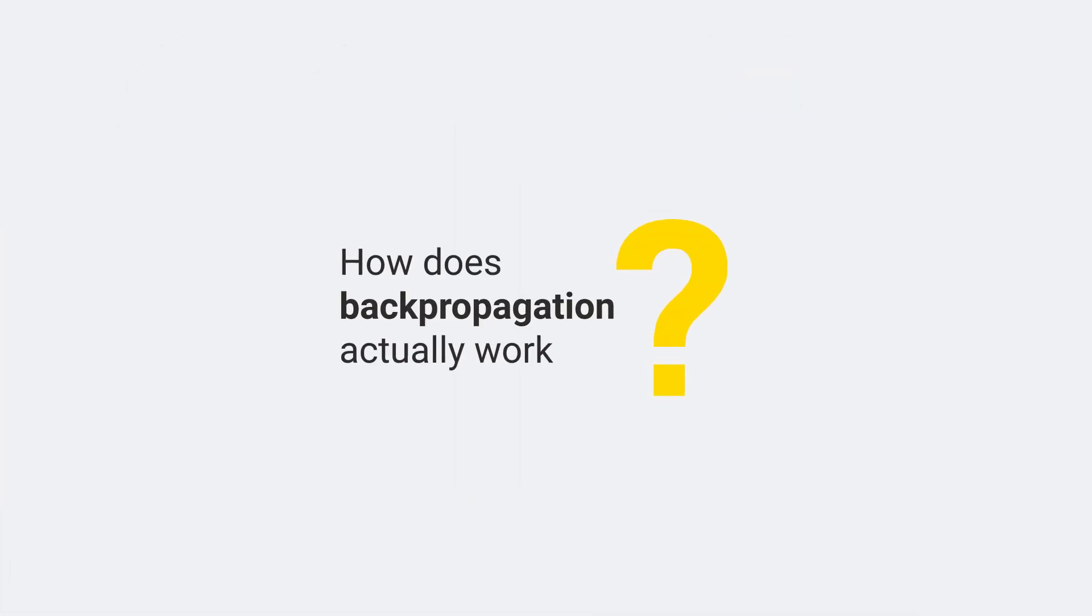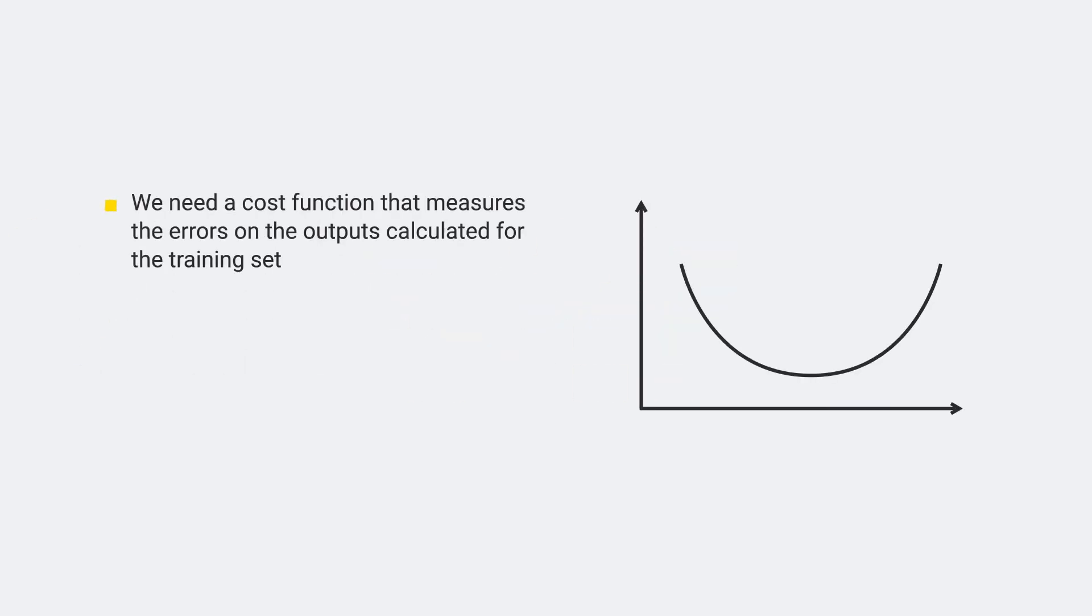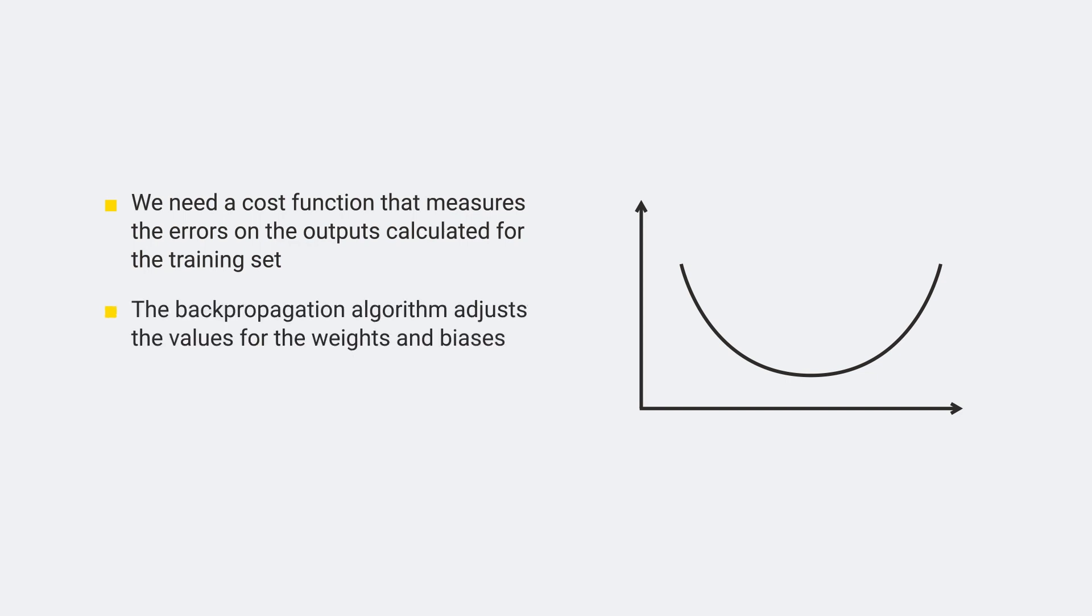How does backpropagation actually work? First of all, we need a cost function that measures the errors on the outputs calculated for the training set. Then, the backpropagation algorithm adjusts, at each step, the values for the weights and biases between the connected layers to reduce this cost function.